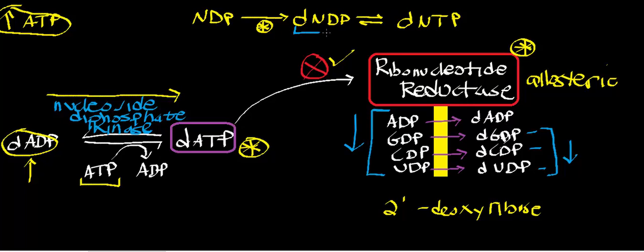Since you're not making those deoxynucleoside diphosphates, you don't get the corresponding deoxynucleoside triphosphates. Therefore, DNA polymerase won't have the substrates it needs, and DNA synthesis drops to negligible levels. Because cells can't divide without replicating their DNA — which requires DNA polymerase and deoxynucleoside triphosphates — they're unable to divide. As a result, the immune response of that person drops sharply. That will be the topic of the next video.